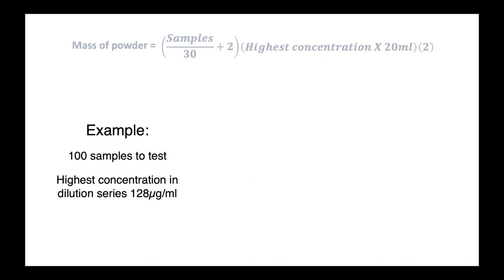If we consider an example situation to apply this equation, we can consider 100 isolates to test and the highest concentration of drug X that we're going to be testing of 128 micrograms per milliliter. So when we plug this information into the equation, you can see here we have 100 samples, we can test 30 per plate. Here's our maximum concentration.